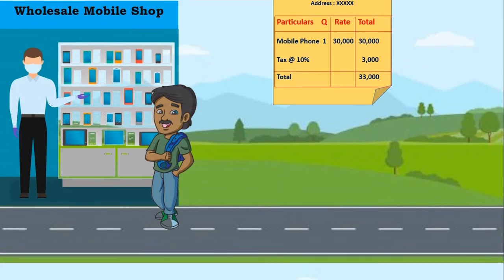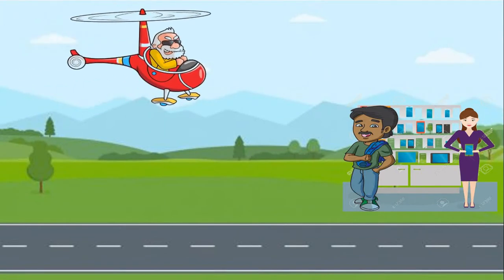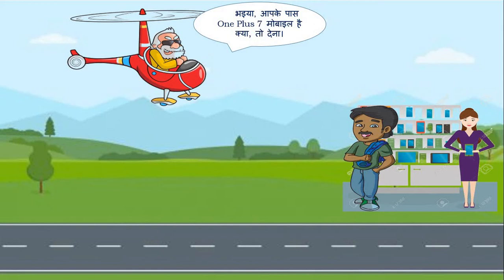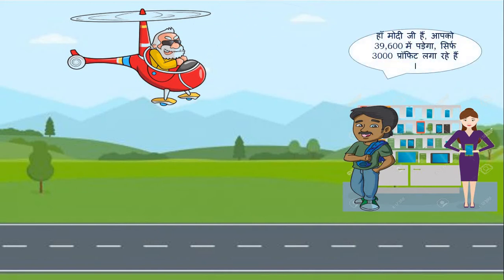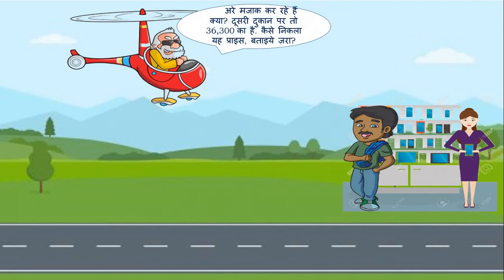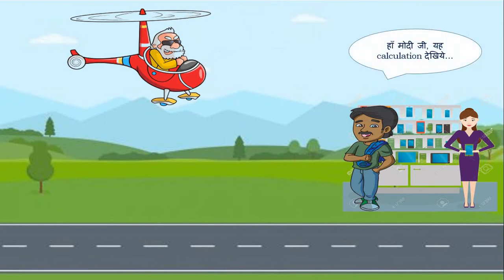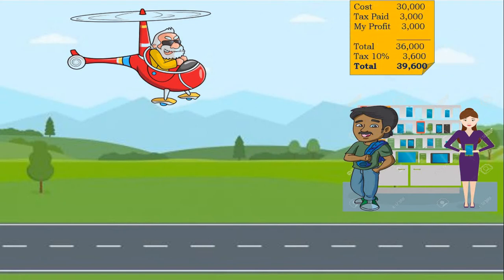In the next clip, Modi ji goes to the retailer and asks for a OnePlus 7 mobile. The retailer says it will cost 49,600 with only 3,000 profit. Modi ji says other shops are selling it for 36,300 and asks how this price was calculated. The retailer shows the calculation: cost 30,000, tax paid 3,000, profit added 3,000, total 36,000, then 10% tax of 3,600, making the total 49,600.